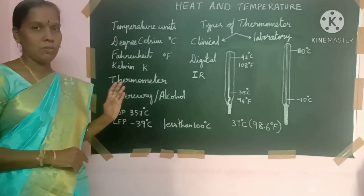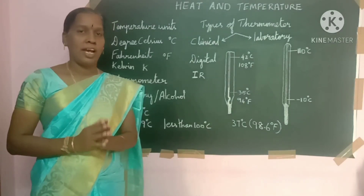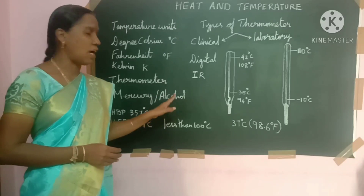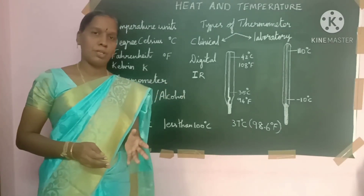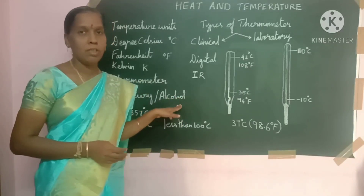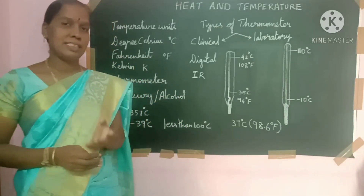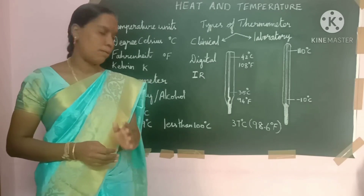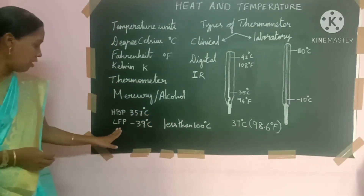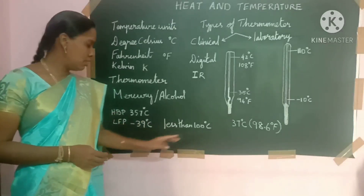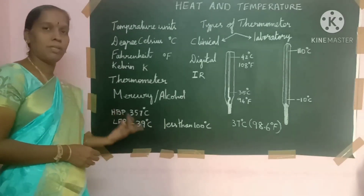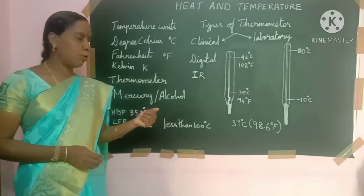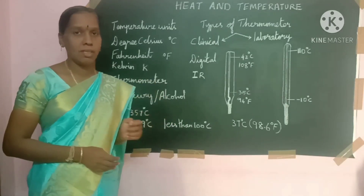Mercury is a toxic substance, so you should handle it carefully. Some thermometers use alcohols instead of mercury — such as ethanol — colored red or blue so it is easy to identify the temperature reading. Alcohol is used for lower temperature ranges. We use both mercury and alcohol as liquids in thermometers.